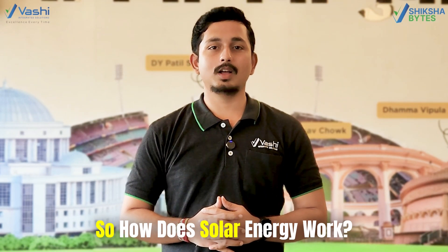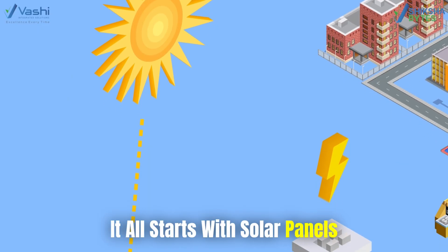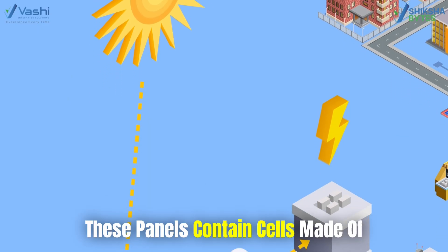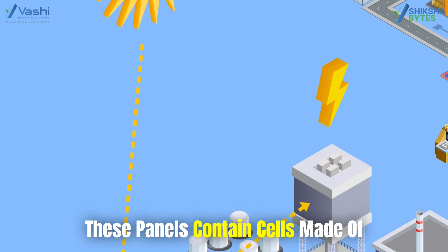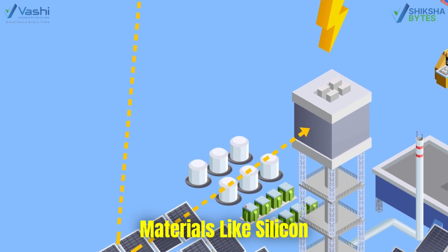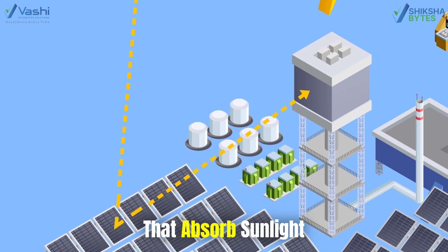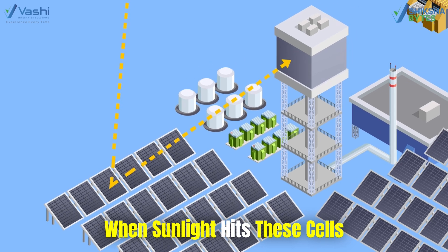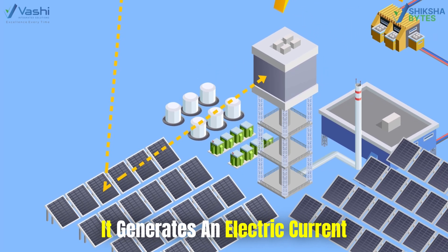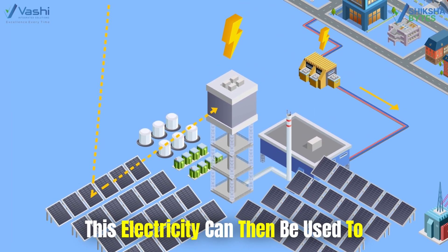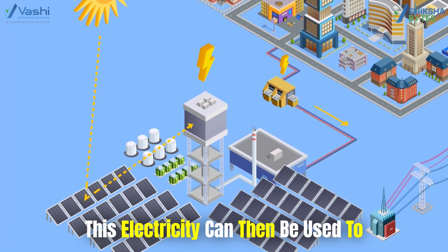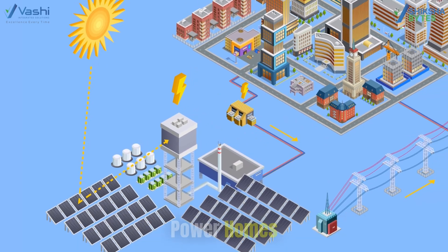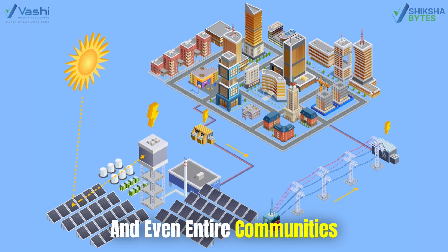So, how does solar energy work? It all starts with solar panels. These panels contain cells made of materials like silicon that absorb sunlight. When sunlight hits these cells, it generates an electric current. This electricity can then be used to power homes, businesses, and even entire communities.